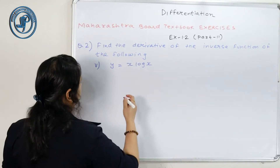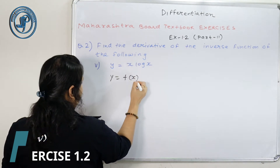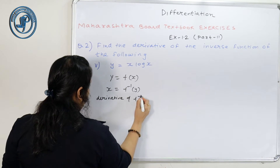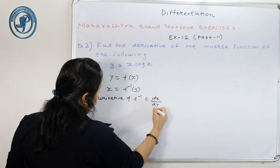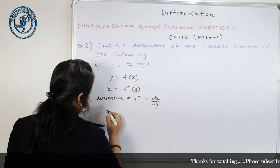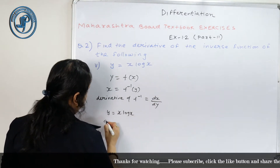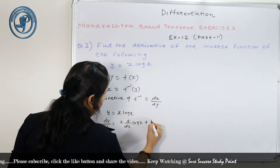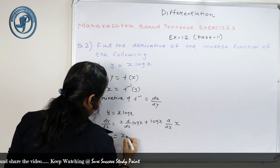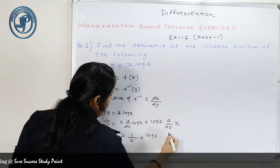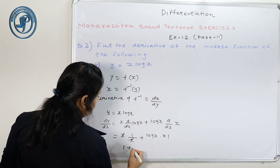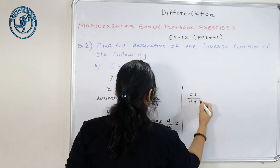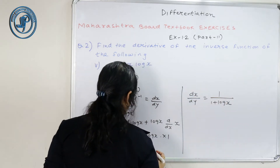हमारे पास question है y equals to x log x, means y equals to fx. तो इसका inverse f inverse y हो जाएगा. मुझे derivative of f inverse निकालना है which is dx upon dy. पहले dy by dx find करते हैं using uv rule: x derivative of log x plus log x derivative of x = x times 1/x plus log x times 1 = 1 plus log x. So dy by dx = 1 plus log x. तो dx upon dy = 1 upon (1 plus log x).